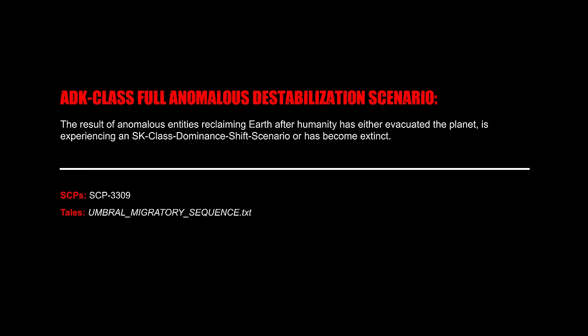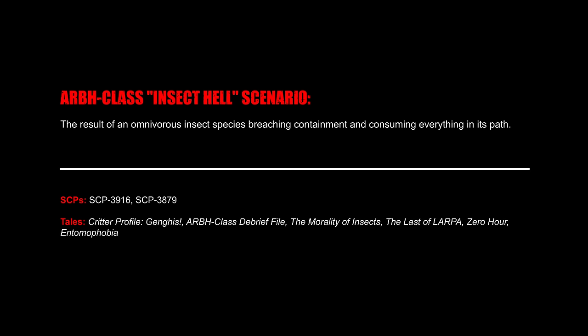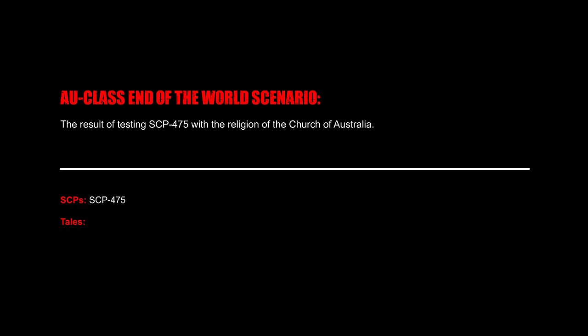D-K Class Full Anomalous Destabilization Scenario: The result of anomalous entities reclaiming Earth after humanity has either evacuated the planet, is experiencing an S-K Class Dominant Shift Scenario, or has become extinct. RBH Class Insect Hell Scenario: The result of an omnivorous insect species breaching containment and consuming everything in its path. U-Class End of the World Scenario: The result of testing SCP-475 with the religion of the Church of Australia.